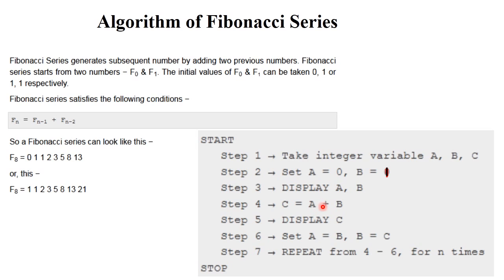Next, calculate a plus b and store the result into variable c. The value of a is zero and b is one, so zero plus one equals one. Display c. After that, step six uses the interchange property: set a equal to b and b equal to c. So a becomes one and b becomes one (the previous c value).